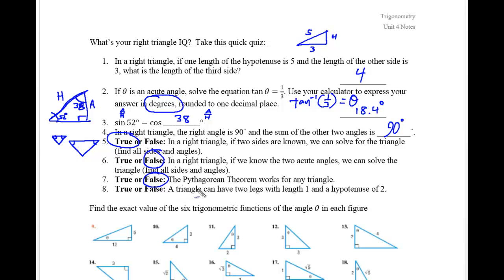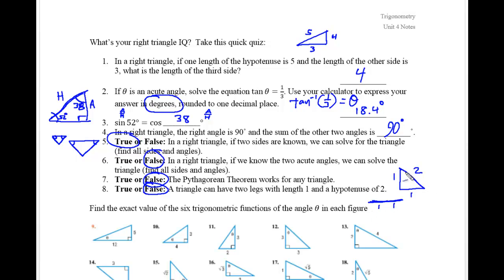Finally, can a triangle have two legs of length 1 and a hypotenuse of 2? That's false. Our brain wants to say 1 plus 1 equals 2, but this is impossible to draw. If you put two sides of length 1 side by side on the floor, that equals 2 — it would be a straight line, not a triangle. You can't have a hypotenuse of 2 with legs of 1 and 1. If the hypotenuse were 2.01, you'd have an extremely obtuse triangle, but not a right triangle.